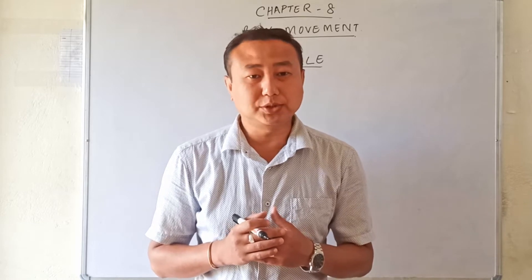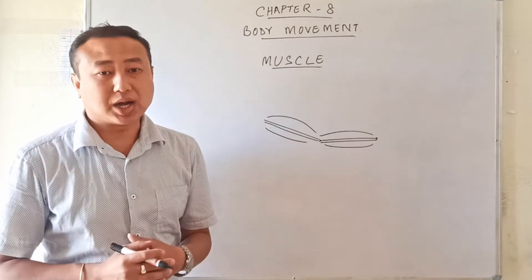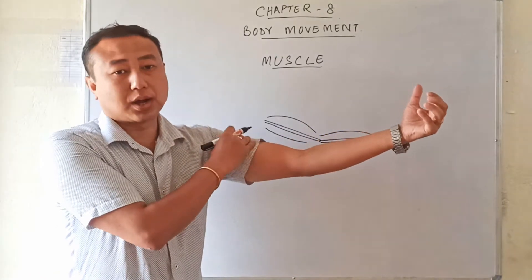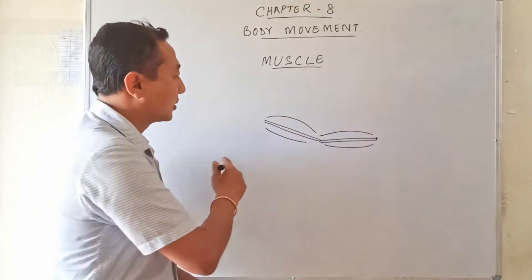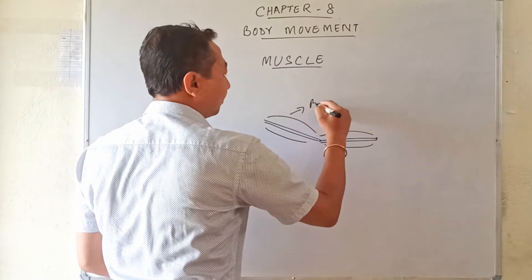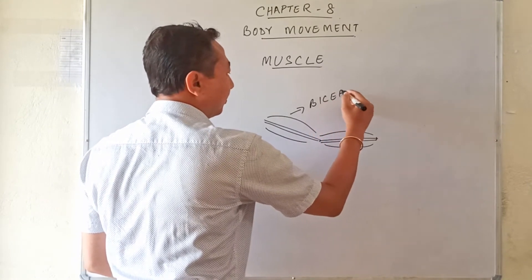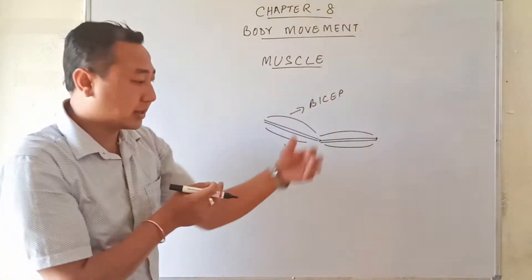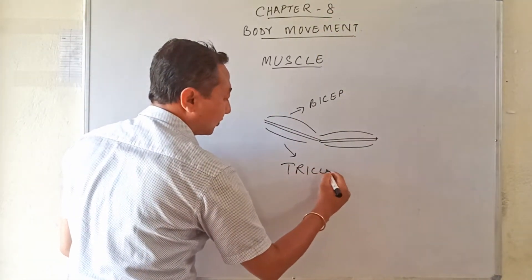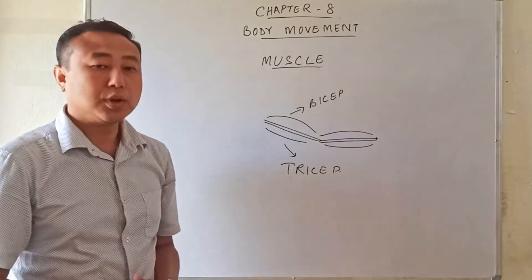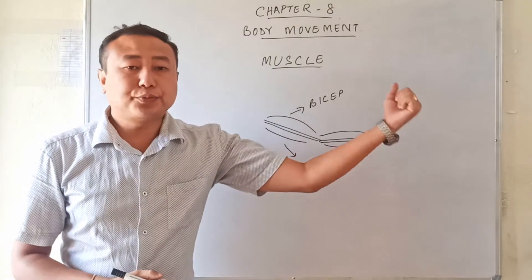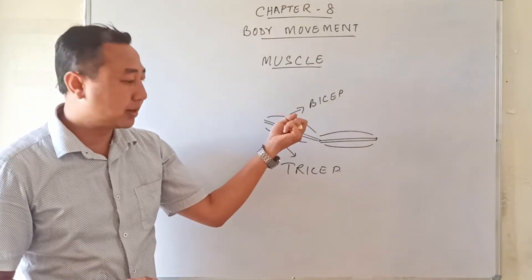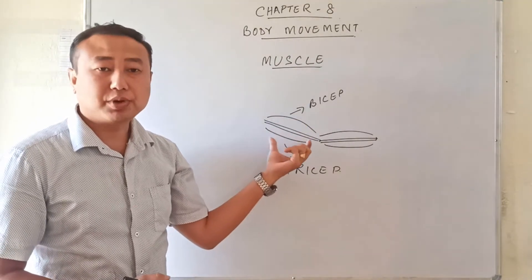Let us see how it happens. Let us say this is the portion of the arm. The upper muscles present in our arm at the upper side are known as the bicep, while the muscles present in the lower portion are known as the tricep. When we fold our hand, the bicep muscles contract while the tricep muscles relax.